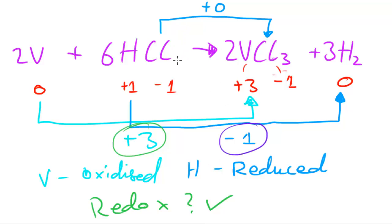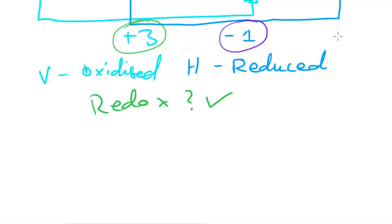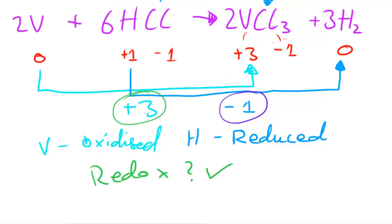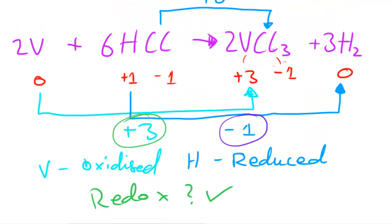Since we have two vanadium atoms here, three electrons have been taken away from each vanadium. We can see that six hydrogen atoms have gained electrons to reach an oxidation number of zero. So we can tell that those six electrons came from the vanadium and all went to the hydrogen. It's a redox reaction. In the next video, I'll be looking at reactions between metals and acids.